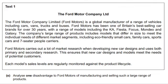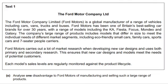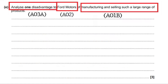The next example is Ford Motor Company. The question is similar but from a different angle — it's one disadvantage, and it's a different company and situation. I'm only looking at one and I'm trying to get those AO3A marks by analysing a disadvantage. My AO2 has to be about Ford Motors, and my AO1B must show the examiner I understand what manufacturing is and selling such large ranges of products.